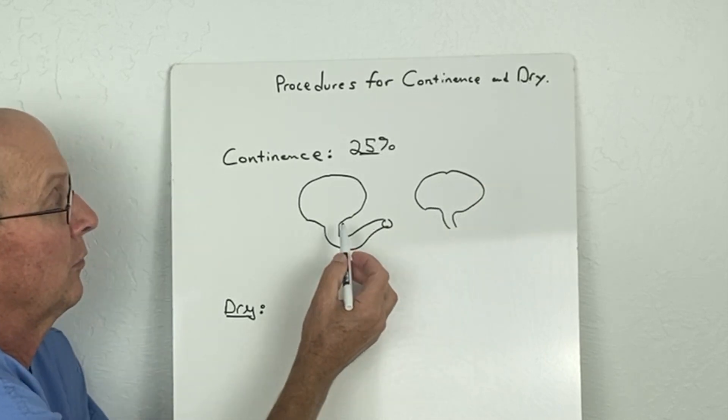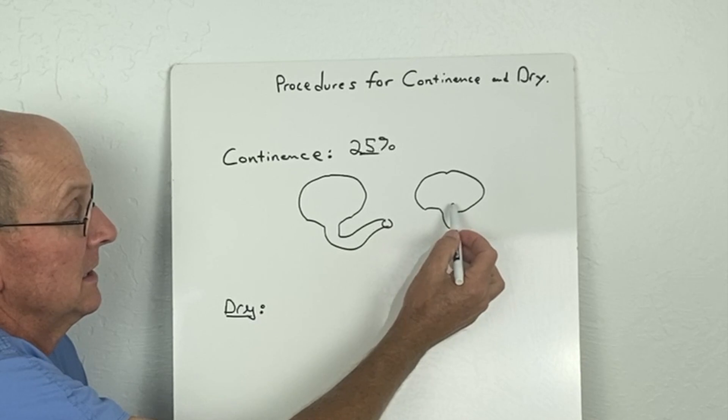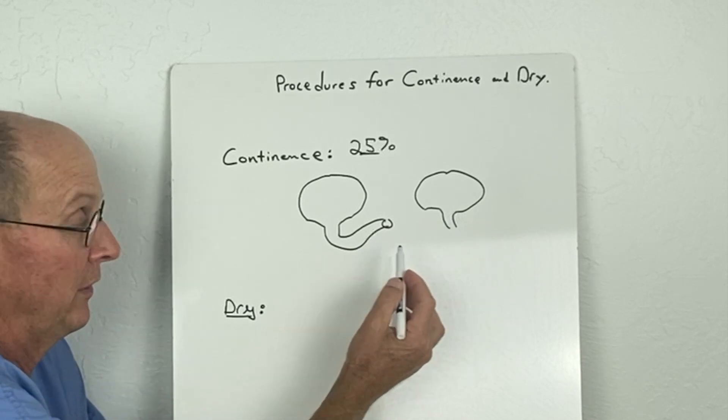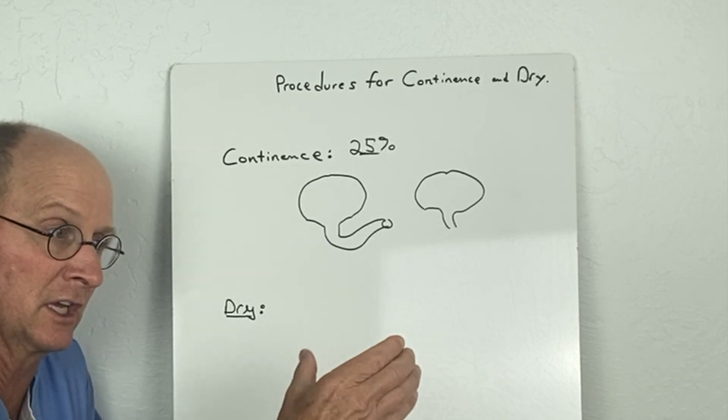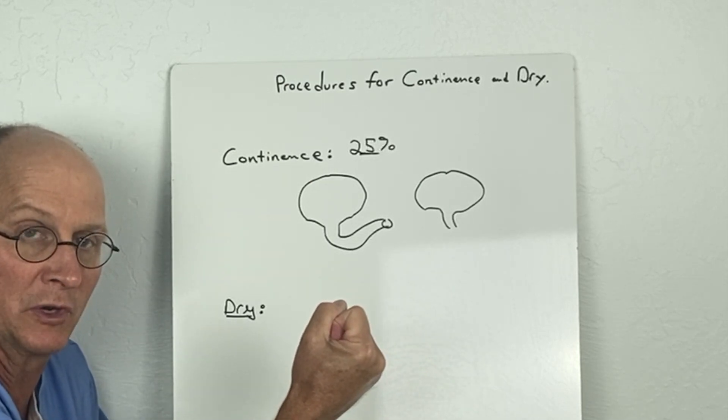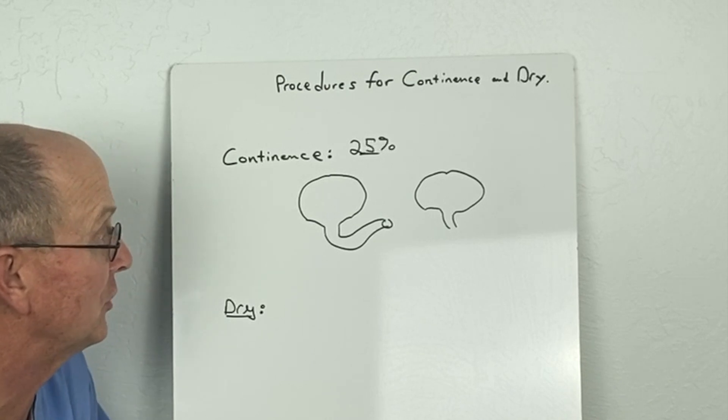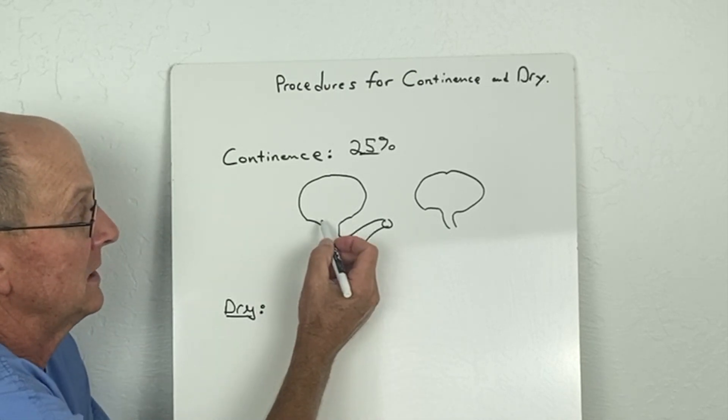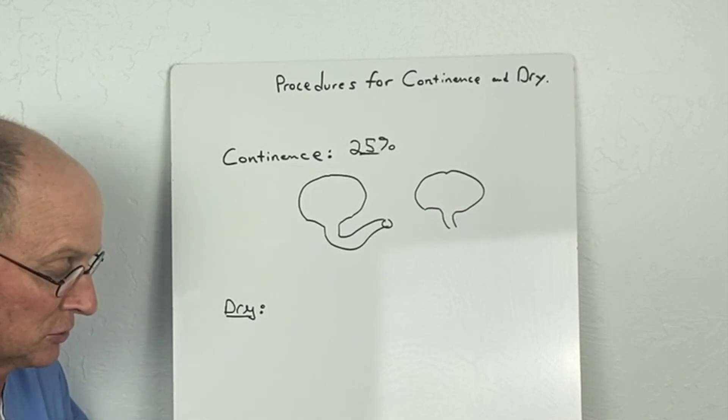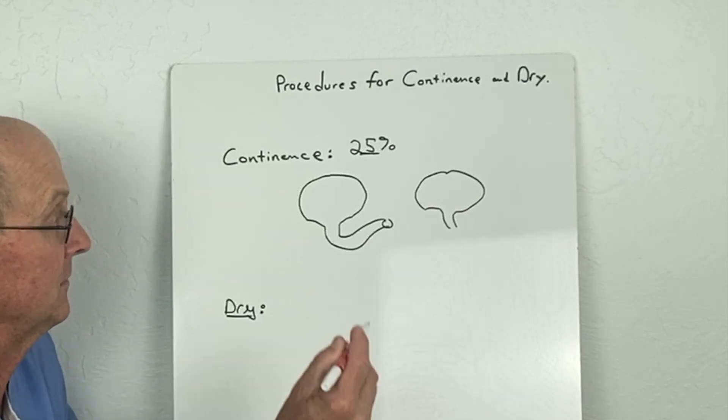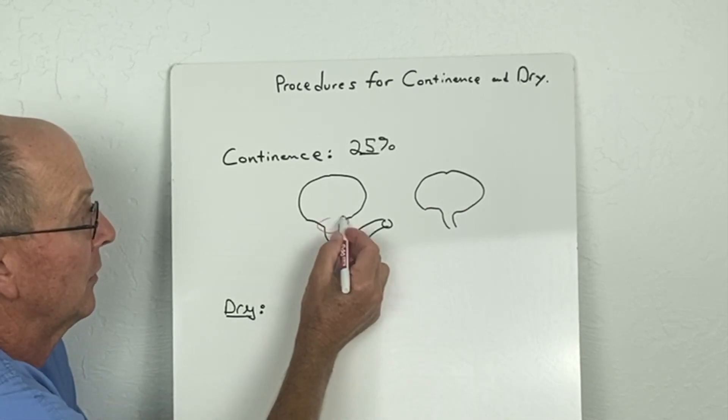What we're really talking about is the bladder neck sphincter area. A lot of people think the sphincter is that muscle that's going to clamp down and hold it when you don't want to urinate, but really continence comes from the bladder neck area.